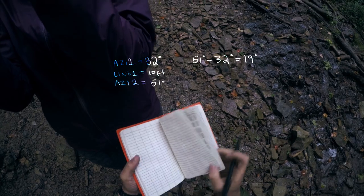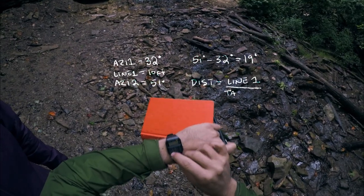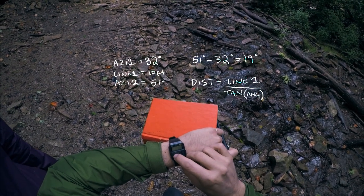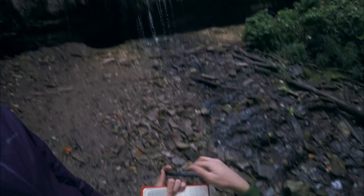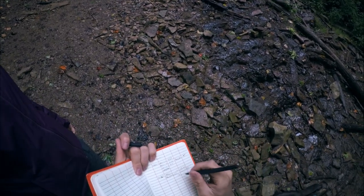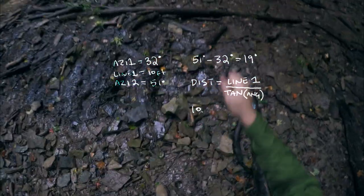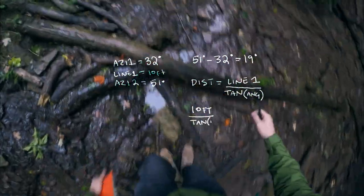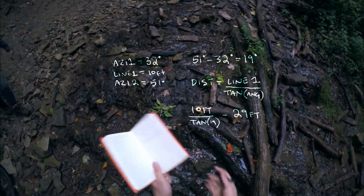Now that we have an angle of 19 degrees, we're going to be using the trigonometry ratio of tangent to calculate how far away this waterfall is. So 51 degrees minus 32 degrees gives me an angle of 19 degrees. All we have to do to measure the distance is take that baseline of 10 feet and divide it by the tangent of the angle we just measured. So that's 10 feet divided by the tangent of 19 degrees, and that gives us an answer of 29 feet.